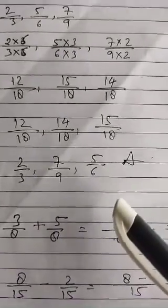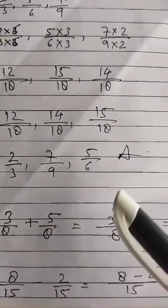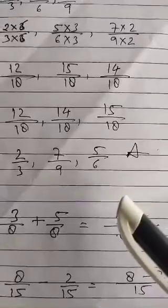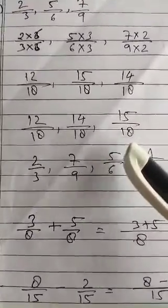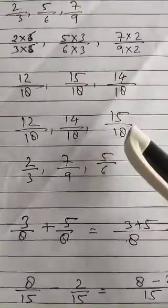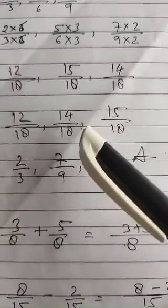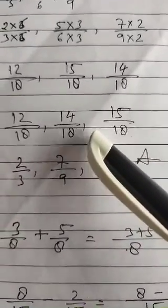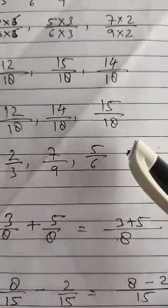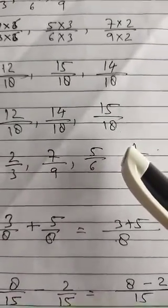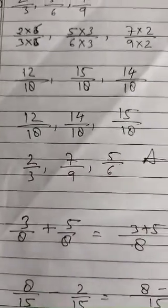Similarly you have to do question number 12, but in that question you have to arrange in descending order. The steps will be the same up to finding the equivalent fractions, and after that you arrange in descending order — meaning from greater to smallest.